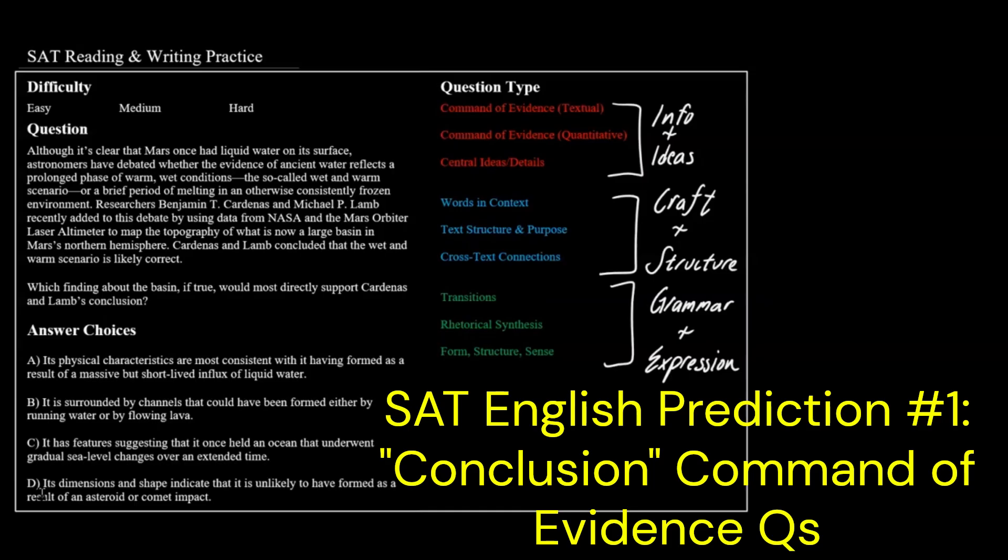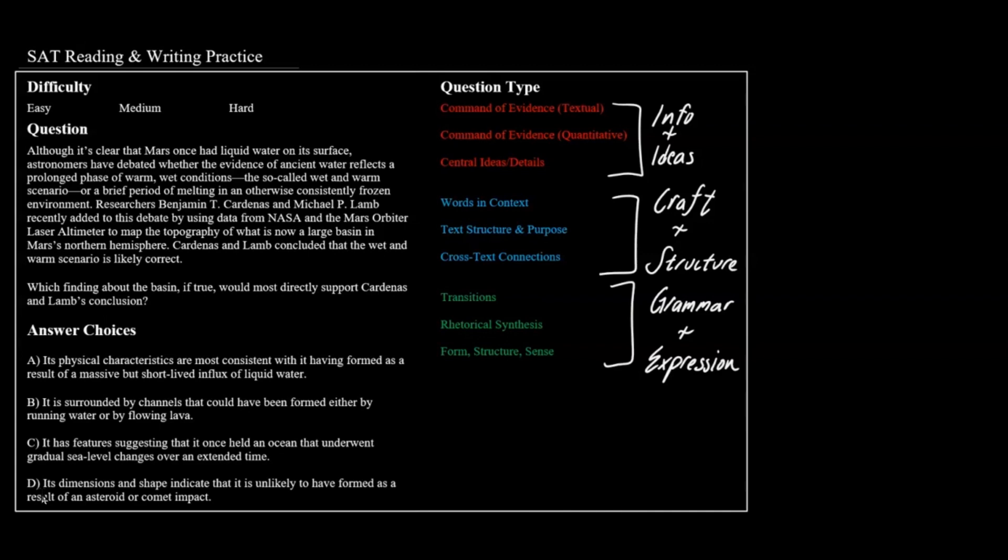So the first thing we want to do when we start off with any sort of English question is we have to actually read the question. That's right. Skip the paragraph and go right to the question, which we have right here. And it asks, which finding about the basin, if true, would most directly support a conclusion? And it'll usually have the word 'concluded' in the passage, usually towards the end. So we found that right there. Cardenas and Lamb concluded that the wet and warm scenario is likely correct.